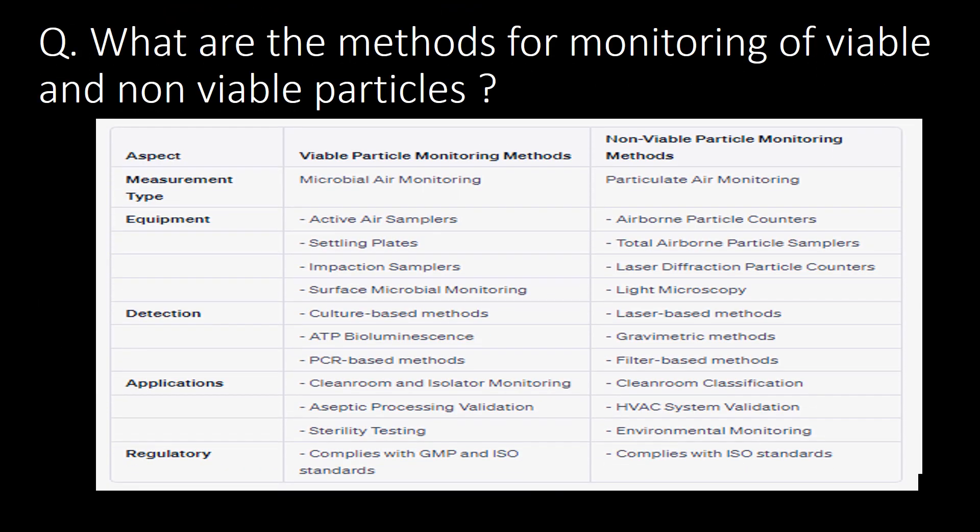What are the methods for monitoring viable and non-viable particles? For viable particle monitoring, we use active air samplers, sampling plates, impaction samplers and surface microbial monitoring. For non-viable particle monitoring, we use airborne particle counters, total airborne particle samplers, laser diffraction particle counters and light microscopy. You can refer to the table below for detection, application and regulatory requirements.